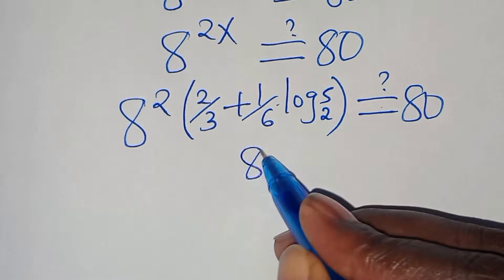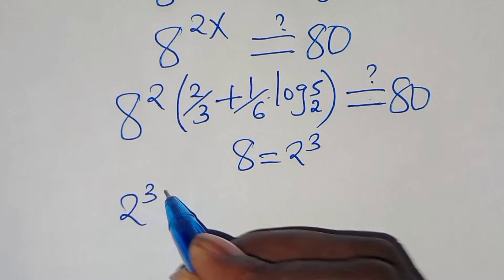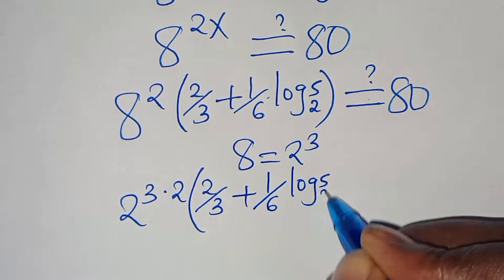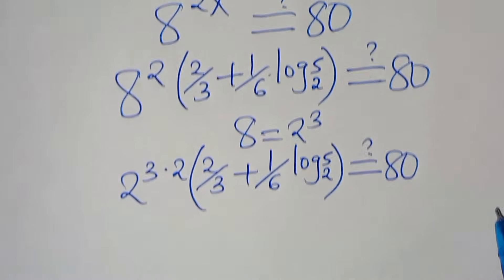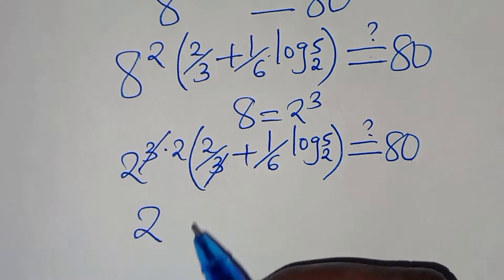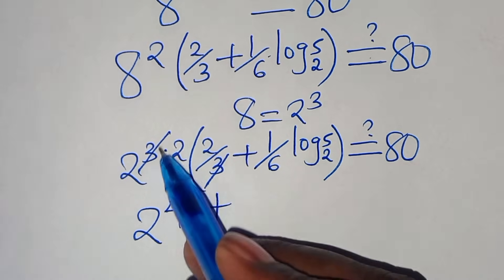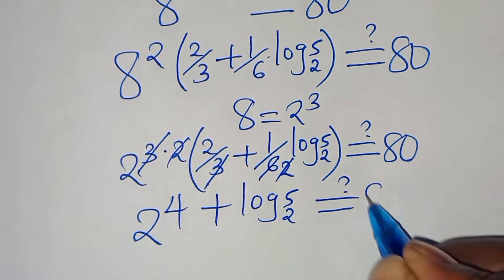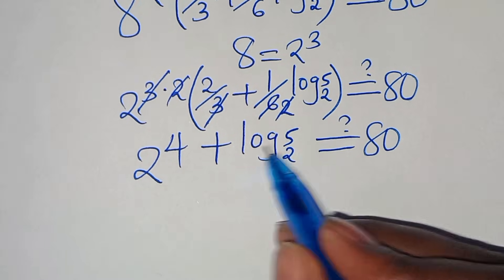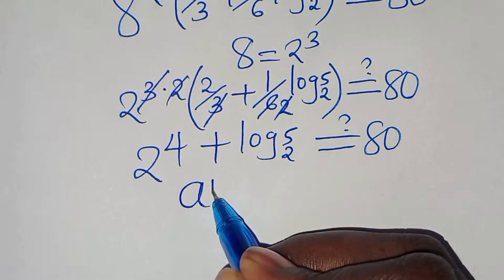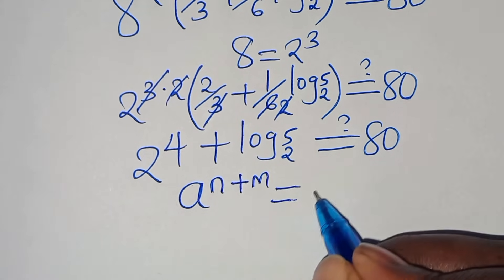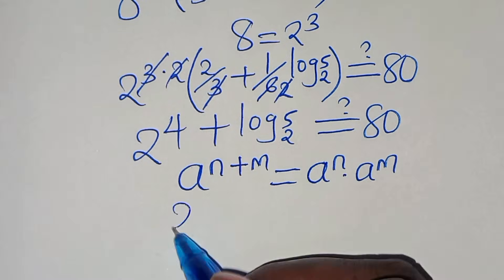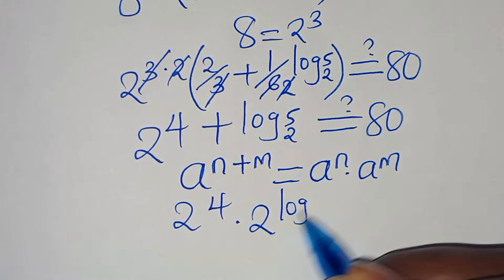We can express 8 as 2 to the power of 3, so we have 2 to the power of 3 times (2 × (2/3 + (1/6)·log₂(5))). Simplifying 3 and 3, we have 2 to the power of (4 + (1/2)·log₂(5)). Wait — simplifying further, we get 2 to the power of 4 plus log₂(5). This is in the form of a^(n+m), which we can express as a^n times a^m. So we have 2^4 times 2^(log₂(5)).